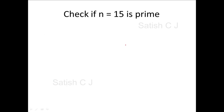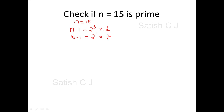We've started learning the algorithm and gone through the first two steps, but there are more clauses in step 2. To understand them, we take n = 15 and check whether n is a prime number. Step 1: express n−1 as 2^s × d. Here n−1 = 15−1 = 14, which we express as 2^1 × 7. So s = 1 and d = 7.